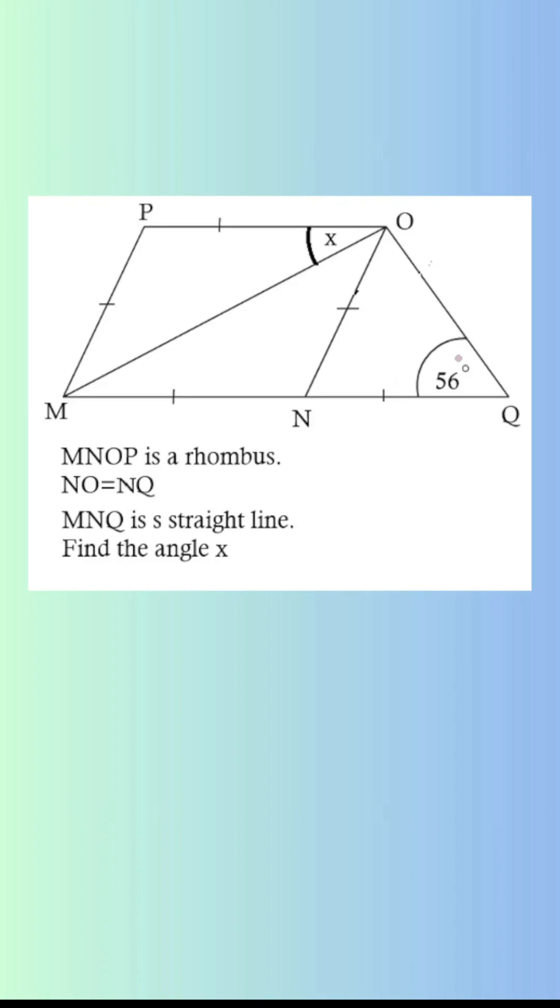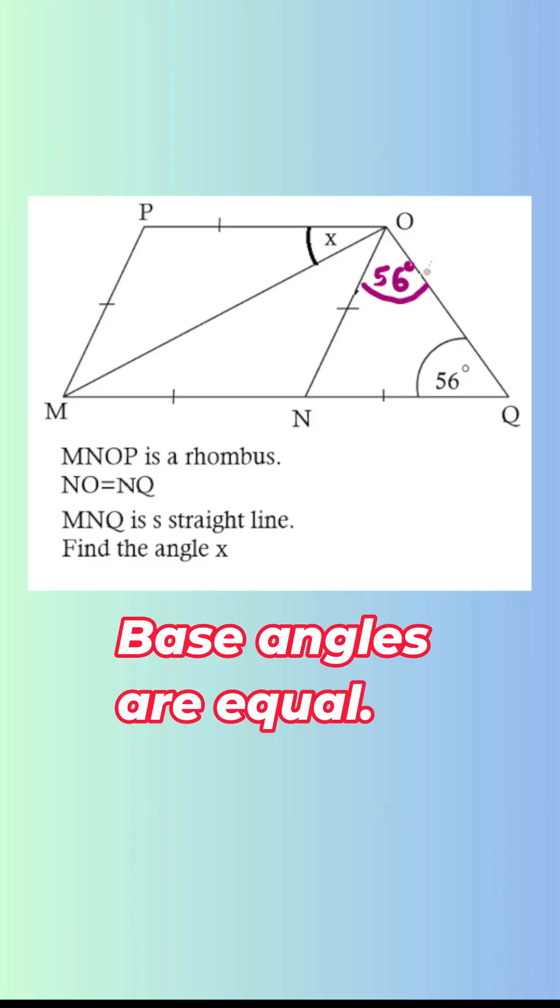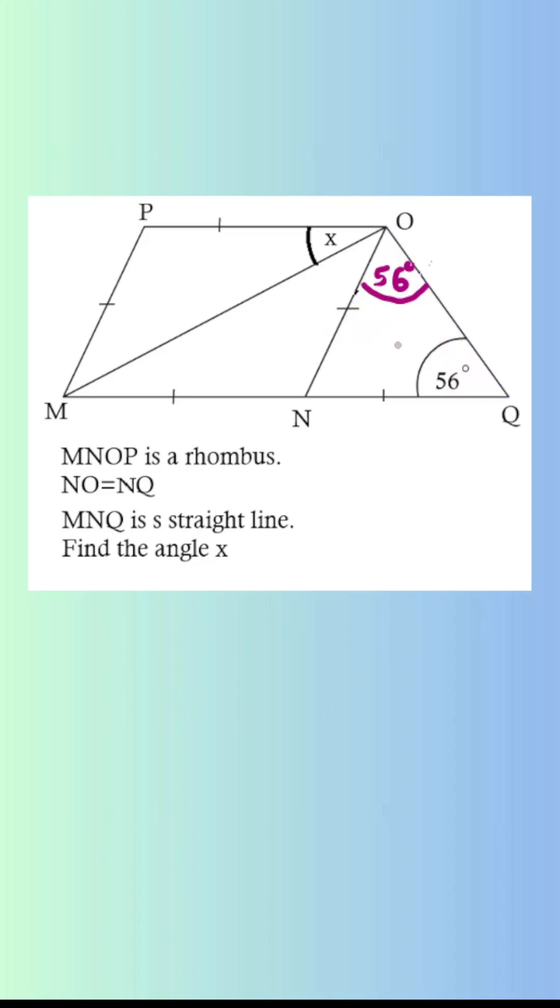Now we know if this angle is 56, this is also 56 degrees. The reason is that NOQ is an isosceles triangle and the base angles are equal. However, we know all three angles of any triangle add up to 180.